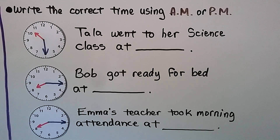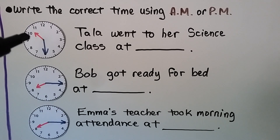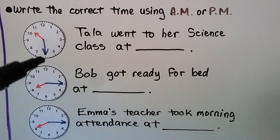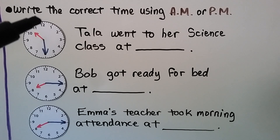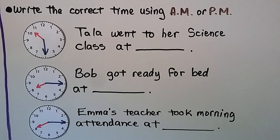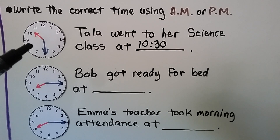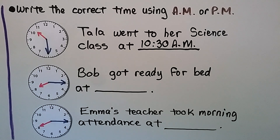It says Tala went to her science class at — the hour hand is between the ten and eleven, so it's still in the tens, and the minute hand is pointing to the six. We skip count by five: 5, 10, 15, 20, 25, 30. The time is 10:30. Is it A.M. or P.M.? Do you think she went to her science class at 10:30 in the morning or at night? At 10:30 at night she's probably in bed already, so that would be 10:30 A.M.